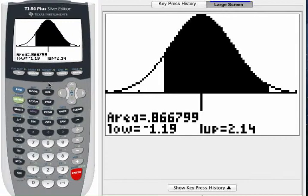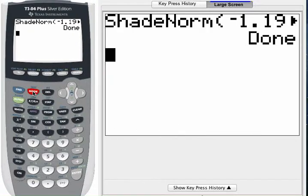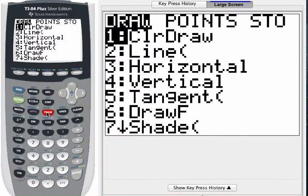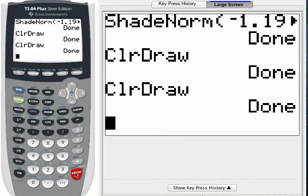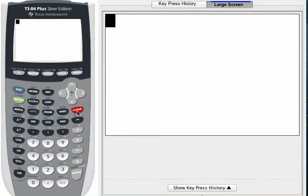Now once you have run the shade norm command, it is important before you run it again to press second quit, go back to your home screen, and you need to clear the drawing. To do that, press the second button and then the program button. This will bring you to your draw options. Clear draw is the first option. Press enter to bring it to the home screen and press enter to execute the command. I'll clear the home screen. Very good.